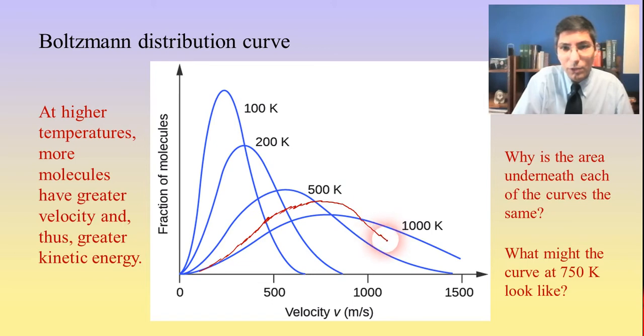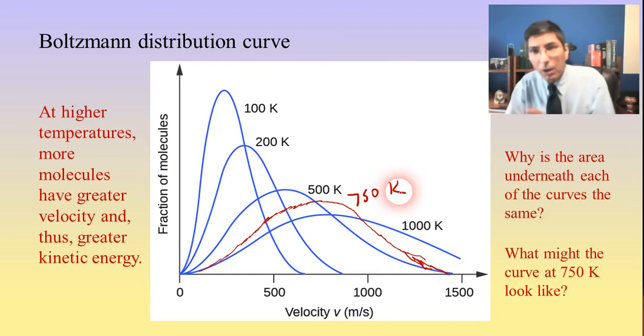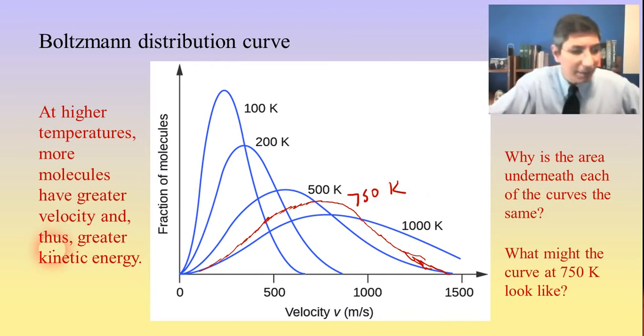It's going to taper off certainly more quickly than it would at 1,000, so it's going to maybe look something like this. So that might be our 750 kelvin curve. Notice it's shoved farther to the right as the temperature goes up.